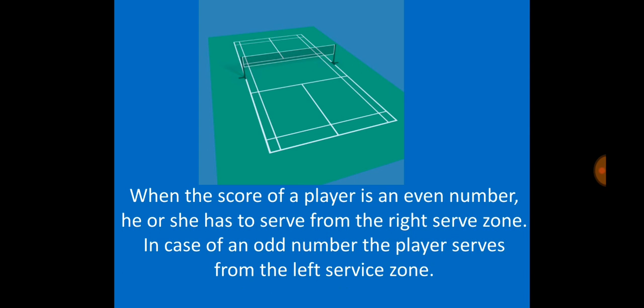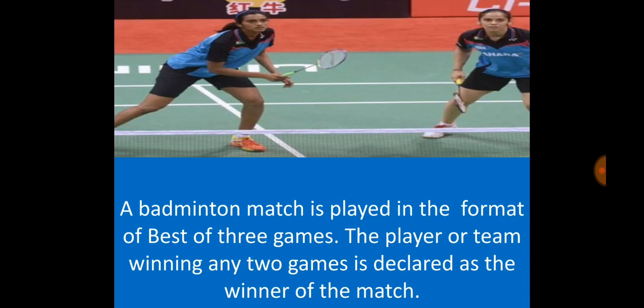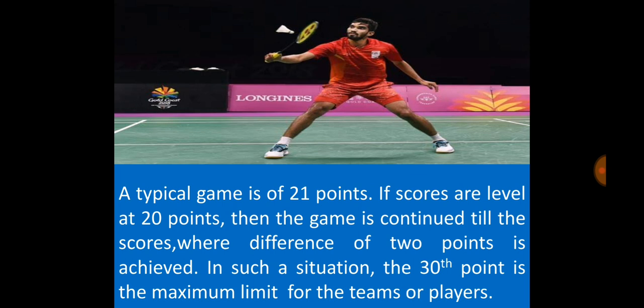When the score of a player is an even number, he or she has to serve from the right service zone. In case of an odd number, the player serves from the left service zone. A badminton match is played in the format of best of three games. The player or team winning any two games is declared as the winner of the match.